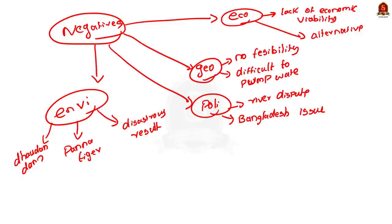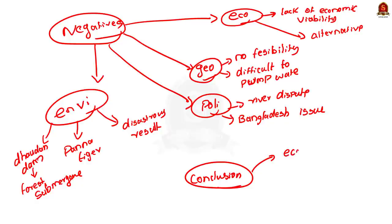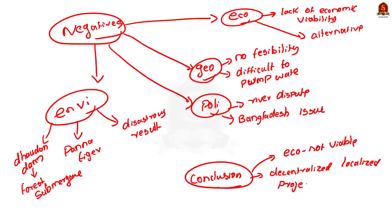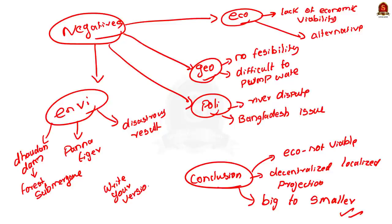I have just given an overview of the general structure for the body. You can further add your own points. In conclusion, write about how implementing this project at an all-India level is both environmentally disastrous and economically unviable. Instead, say how the government can focus on decentralized, small, localized interlinking projects with proper environmental impact assessments. For example, the government is currently focusing more on the Godavari-Cauvery link rather than the earlier proposal to link Mahanadi, Godavari, Krishna, Pinnar, and Cauvery — moving from bigger to smaller projects. You can post your versions of the answer in the comment section.